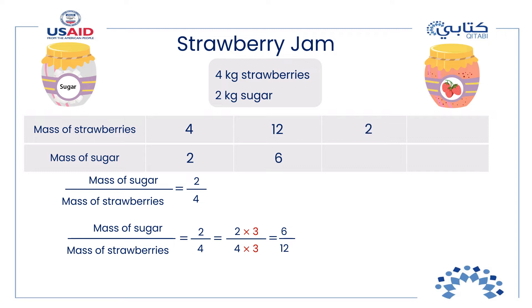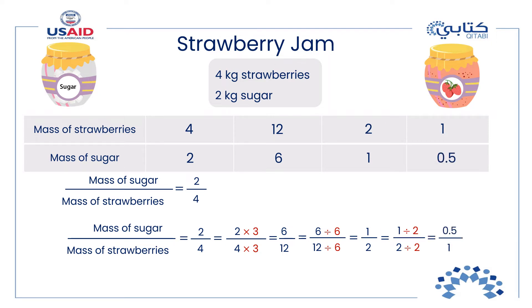Charlotte has two kilograms of strawberries, which is one-sixth of the twelve kilograms I have. She should calculate one-sixth of my amount of sugar: six divided by six equals one. Charlotte needs one kilogram of sugar. Sam has one kilogram of strawberries — half the amount Charlotte has — so we divide Charlotte's one kilogram of sugar by two. Sam needs 0.5 kilograms of sugar for his one kilogram of strawberries.